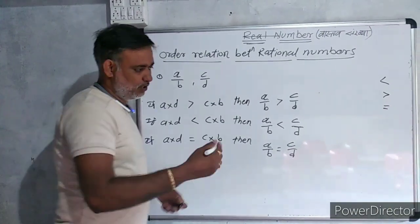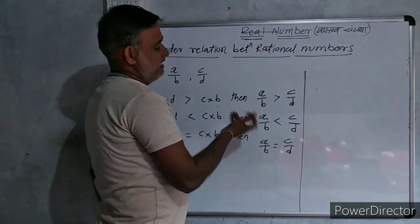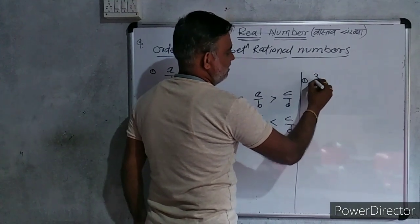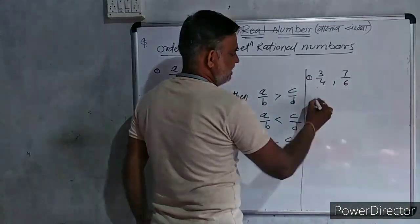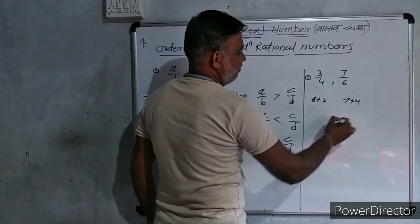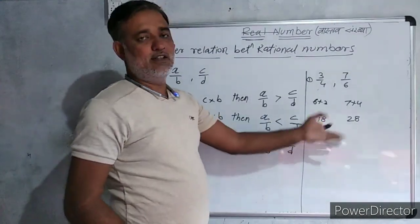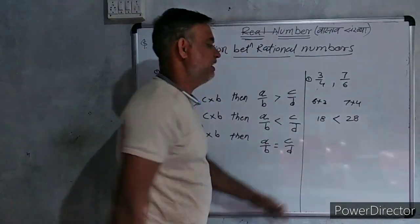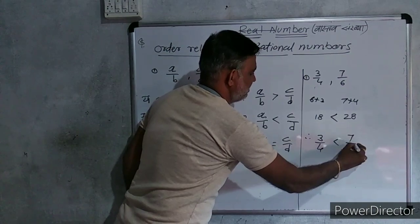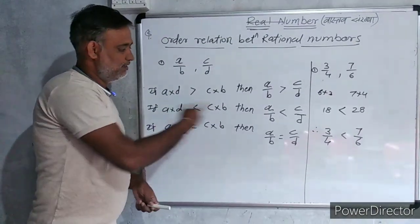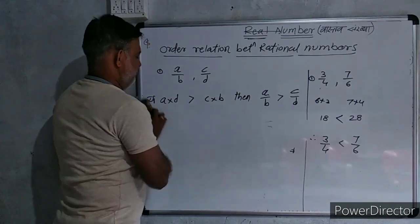You can take any example. Suppose, example 2.1: 3 upon 4 and 7 upon 6. There are two rational numbers. If we cross multiply, 6 into 3, 7 into 4. 6 threes are 18 and 7 fours are 28. Now, we can easily say which number is greater. 28 is greater. Right hand side is greater. Therefore, we can write 3 by 4 is less than 7 by 6. You can solve many examples of this kind.